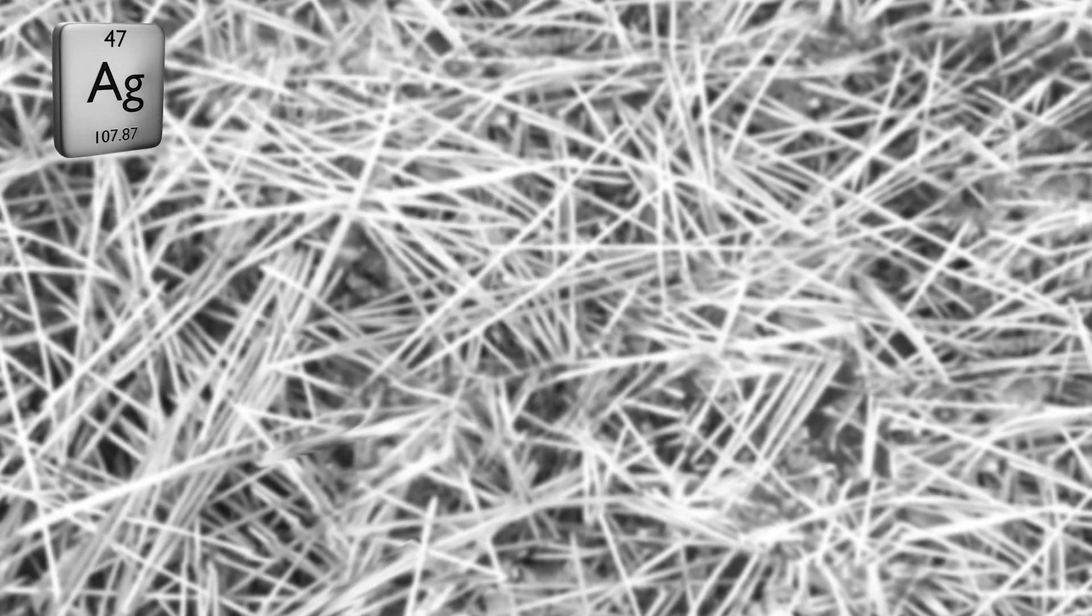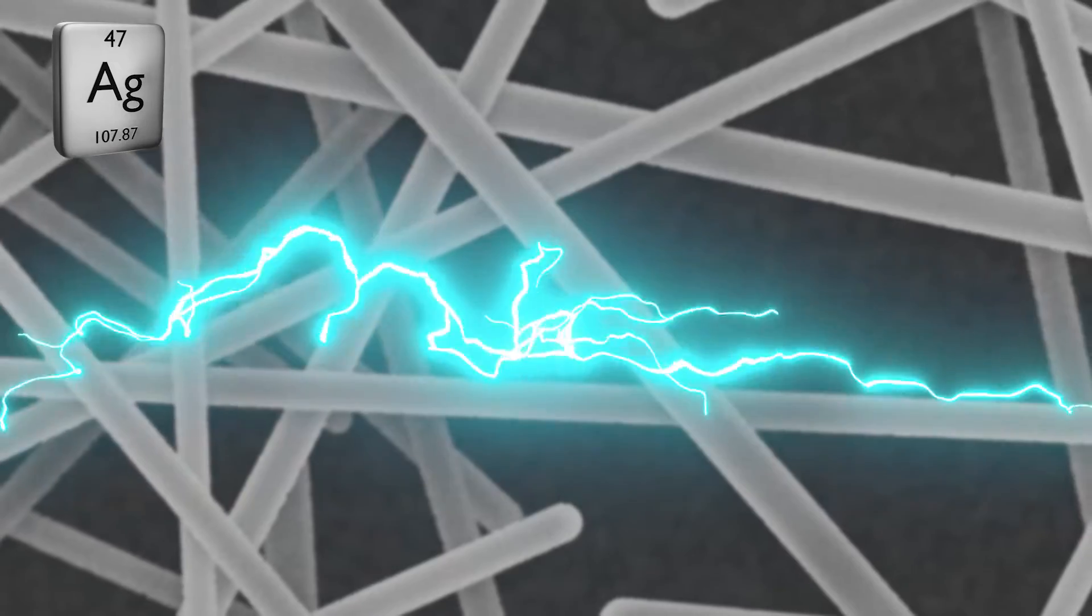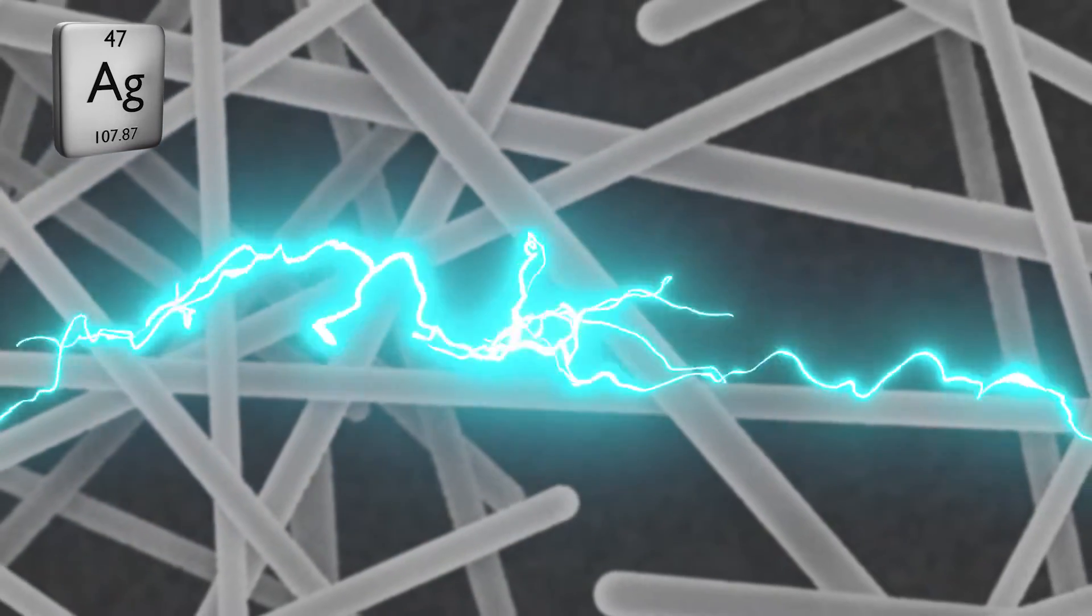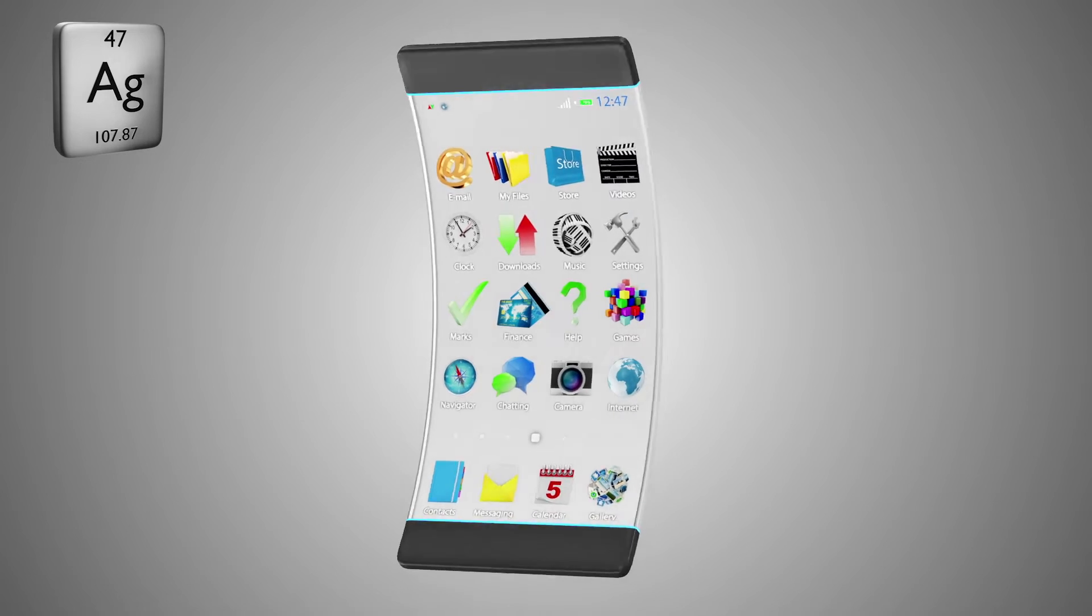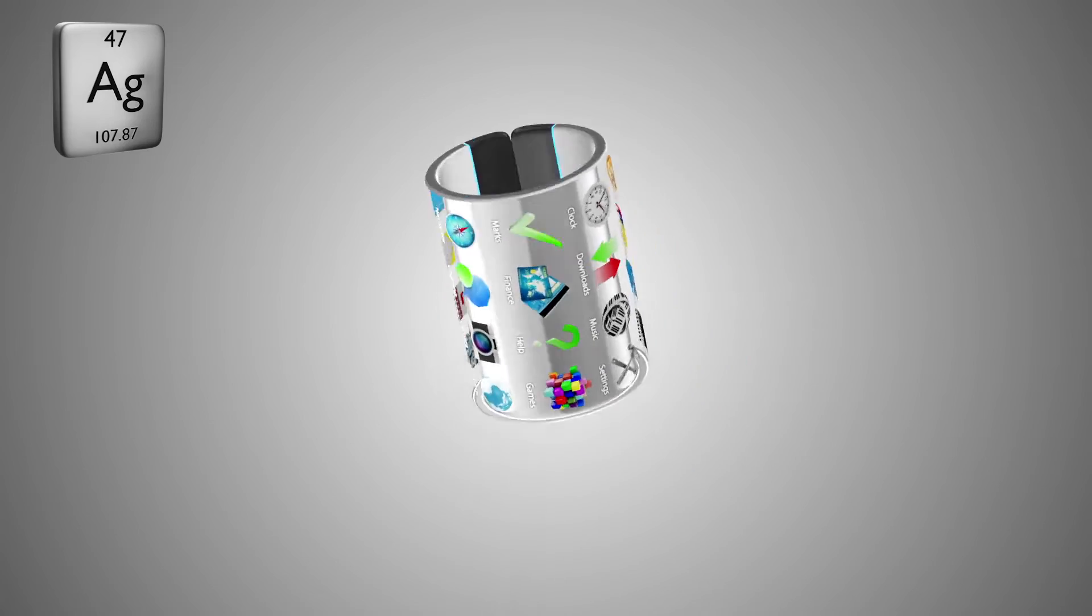Two-dimensional networks of tiny silver wires can retain high conductivity while acquiring new properties, such as flexibility, stretchability, and transparency, which can be used to make foldable touchscreens or printable electronic displays.